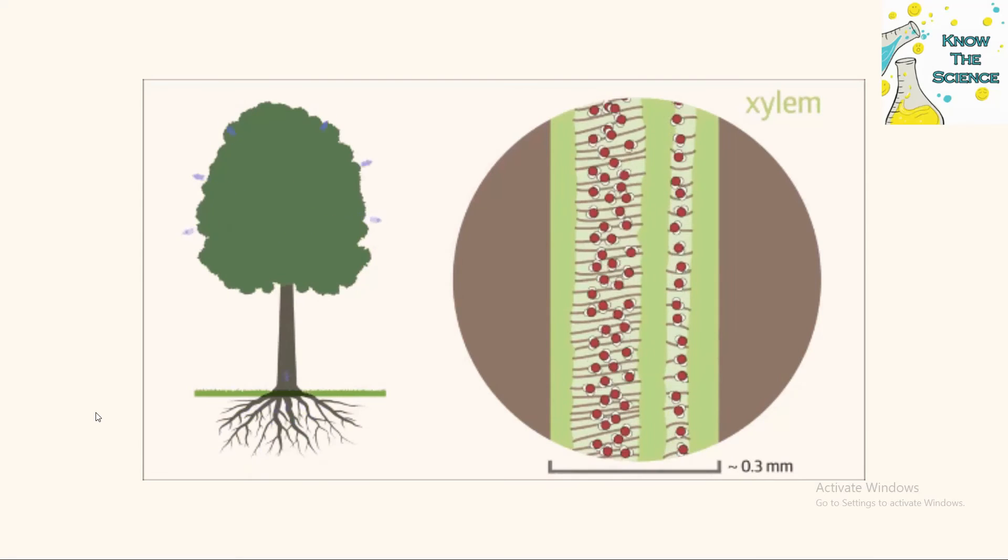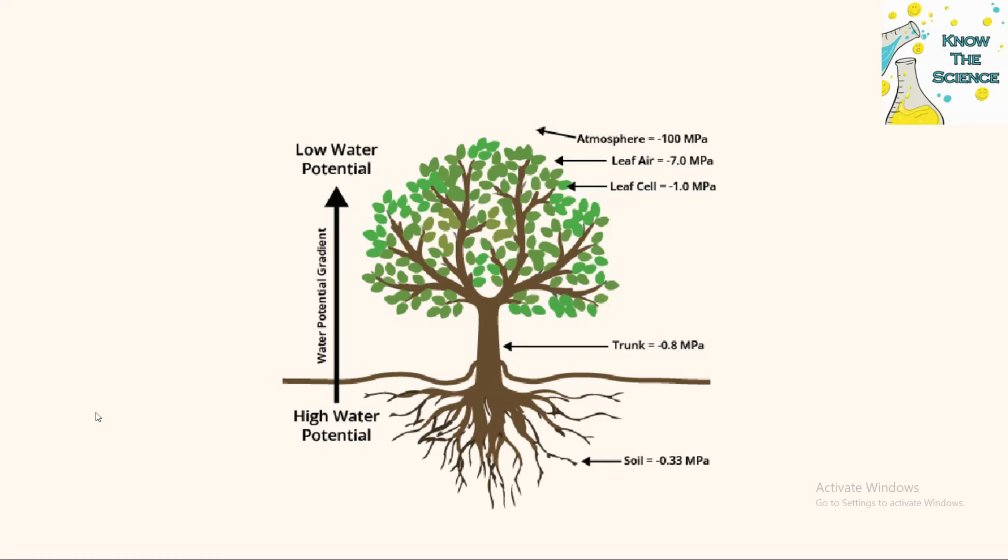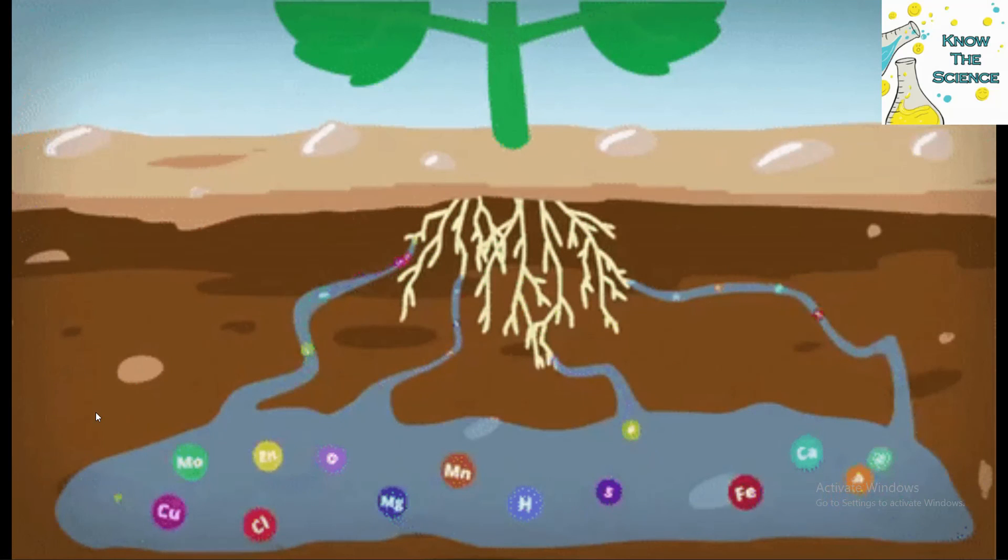Water moves from areas of higher water potential to areas of lower water potential. This movement can occur through processes like osmosis, diffusion, or through plant tissues via transpiration.